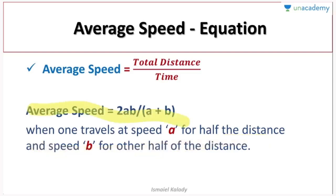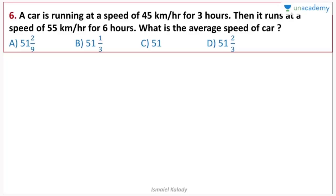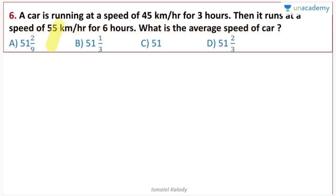A car is running at a speed of 45 km per hour for 3 hours. Then it runs at a speed of 55 km per hour for 6 hours. What is the average speed of the car? This is the direction we use the equation — but using 45 km and 55 km directly doesn't work here because the times are different.